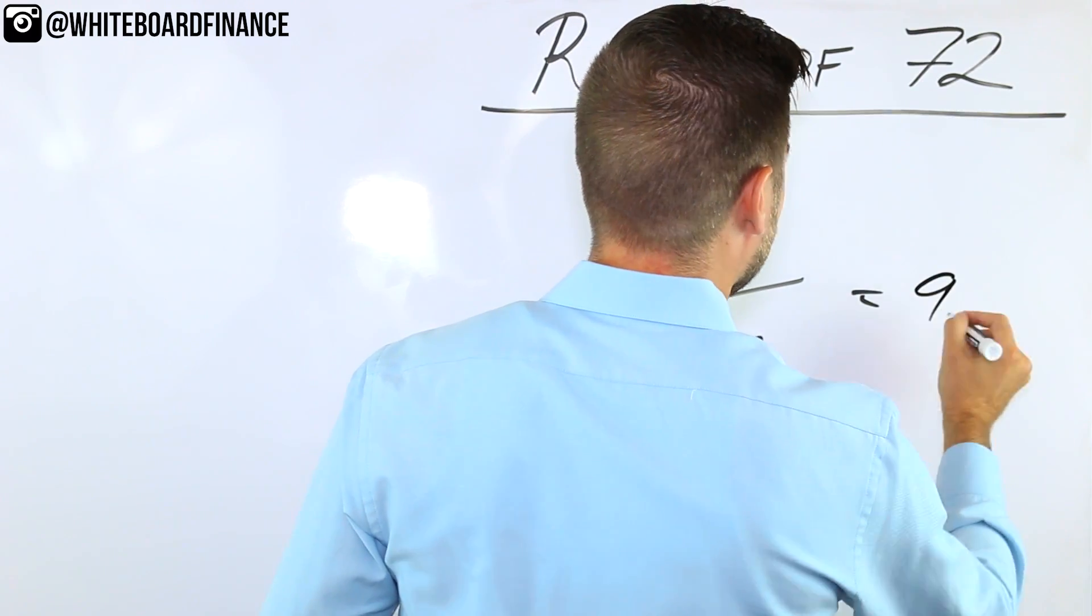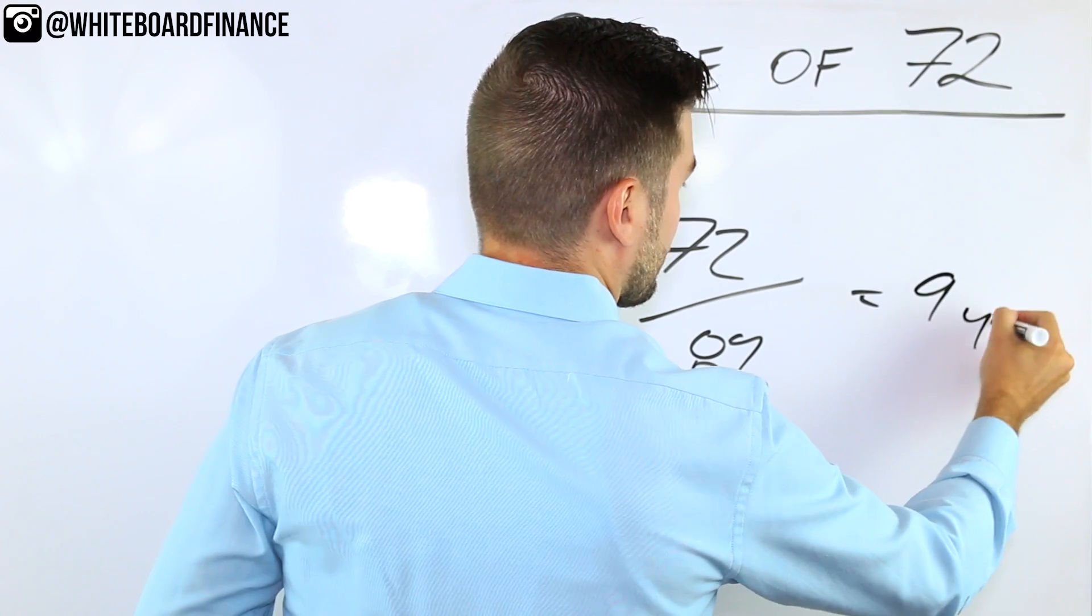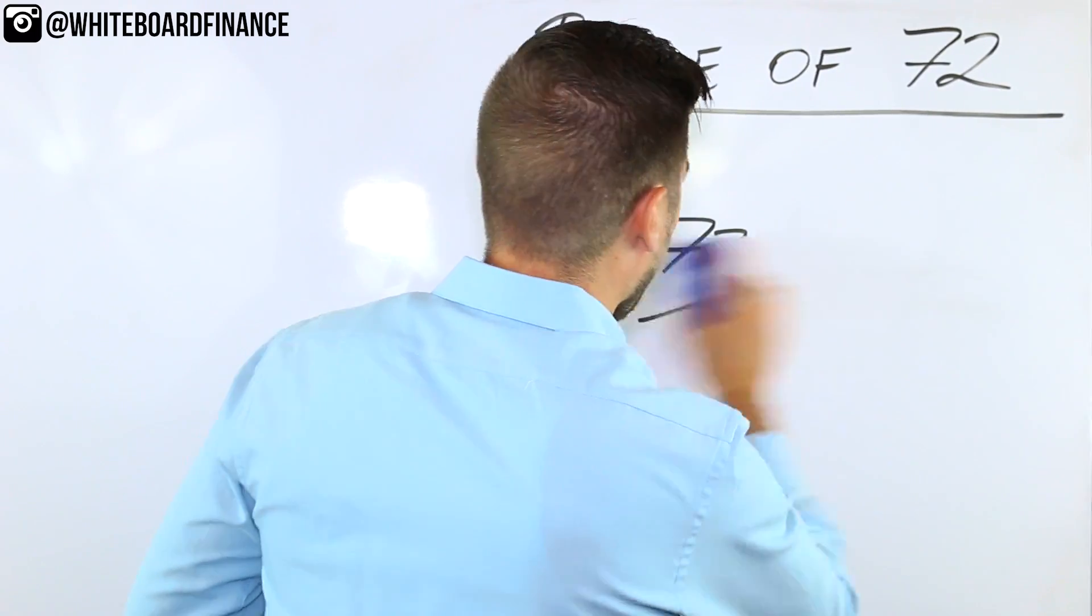All right. Very simple. 72 divided by 8 equals nine years. Very good. You're now ready to hit Wall Street.